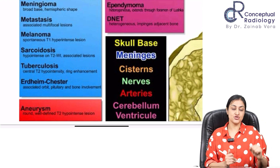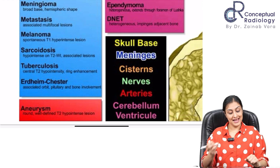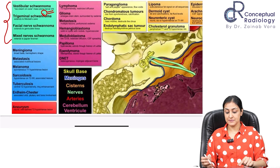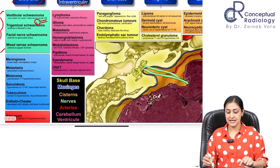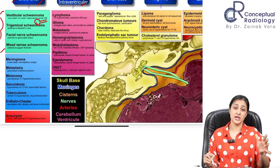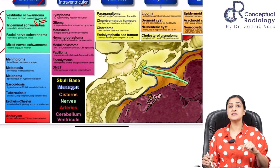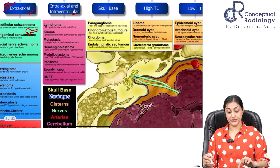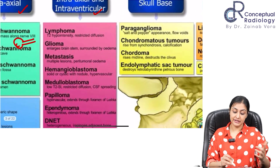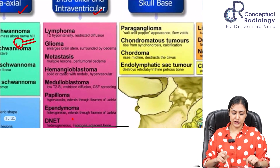IgG4-related disease remains a possibility for diffuse meningeal lesions. Basilar artery aneurysm can be epicentered at the CP angle — on MRI the flow void makes it easy to identify, but on CT a thrombosed hyperdense aneurysm can mimic a tumor.